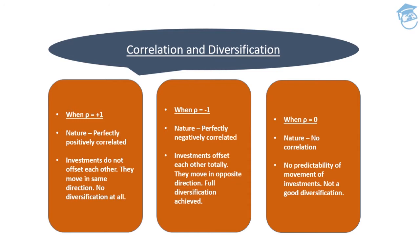Let's see the first table I've made. We have three boxes: one is when the correlation is plus one, second when the correlation is negative one, and lastly when the correlation is zero. When the correlation is positive one, the two securities are perfectly positively correlated — that simply means both investments do not offset each other. Both the market and the security are moving in the same direction.